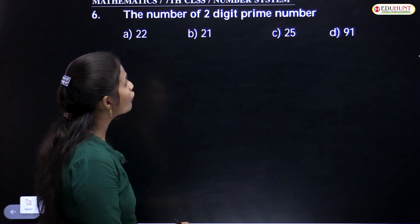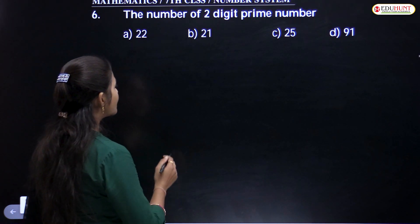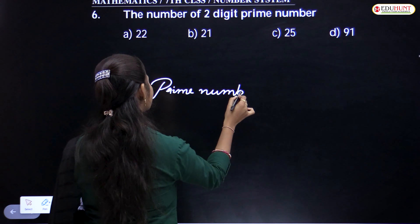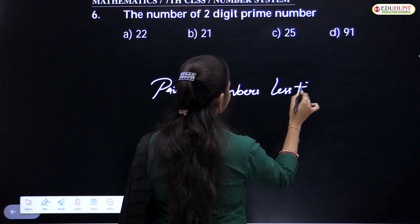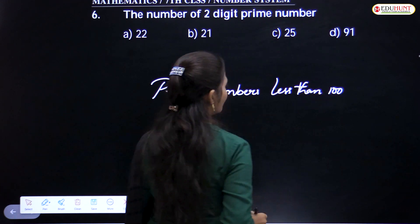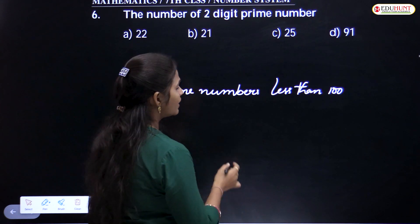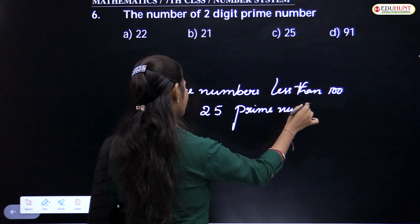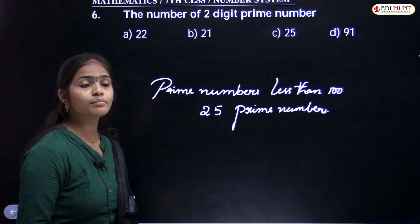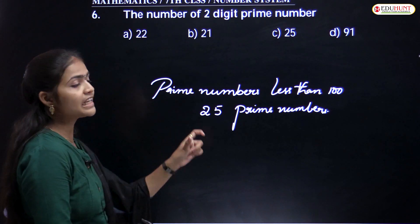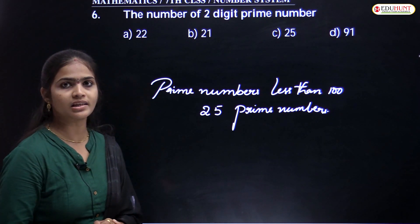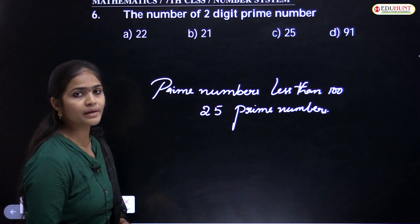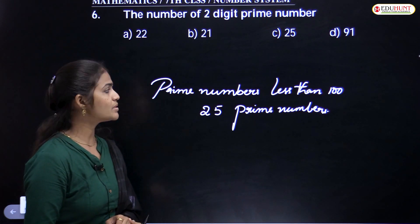The next question: the number of 2-digit prime numbers. How many prime numbers are there less than 100? There are 25 prime numbers less than 100. You can verify this using the Sieve of Eratosthenes process, which gives all the prime numbers. So there are 25 prime numbers from 1 to 100.